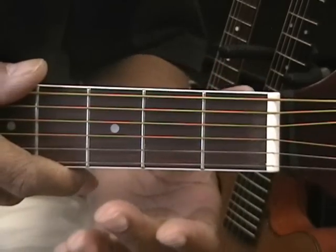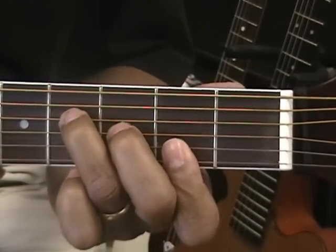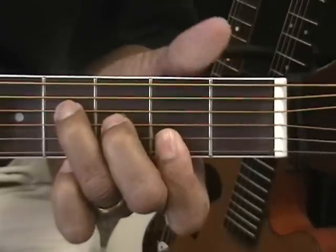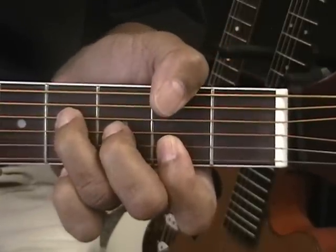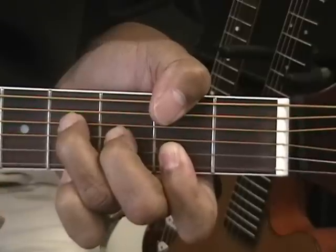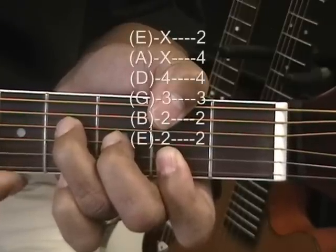Now we need F sharp major, which is made this way. We can also add a low bass note by bringing the thumb over if you can reach that. That's one way to make it.